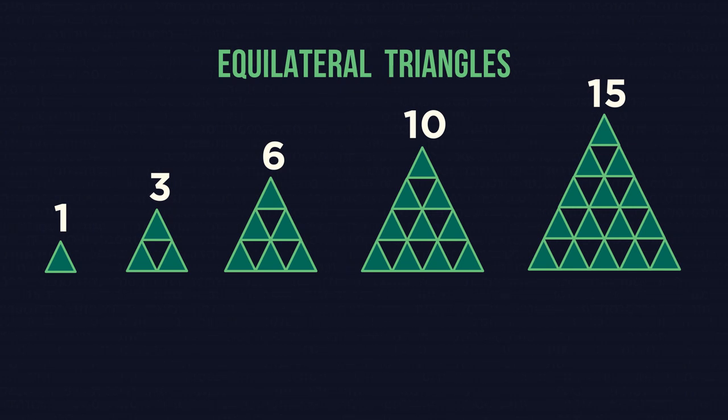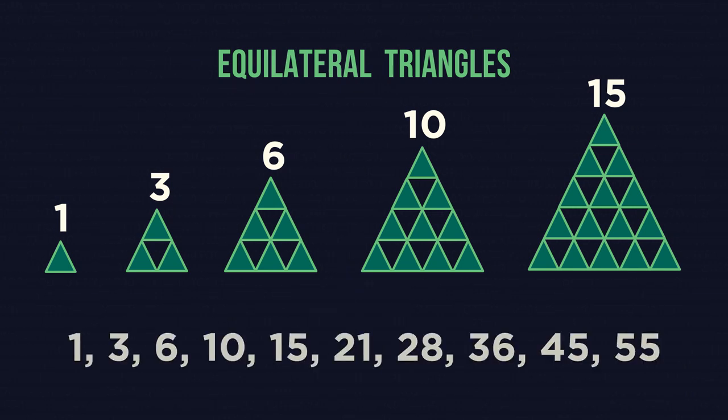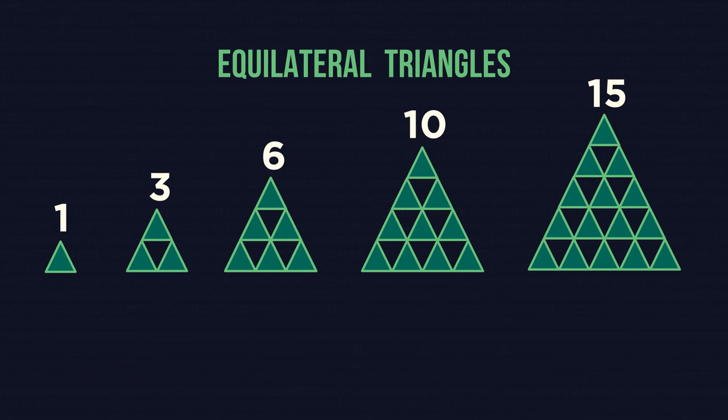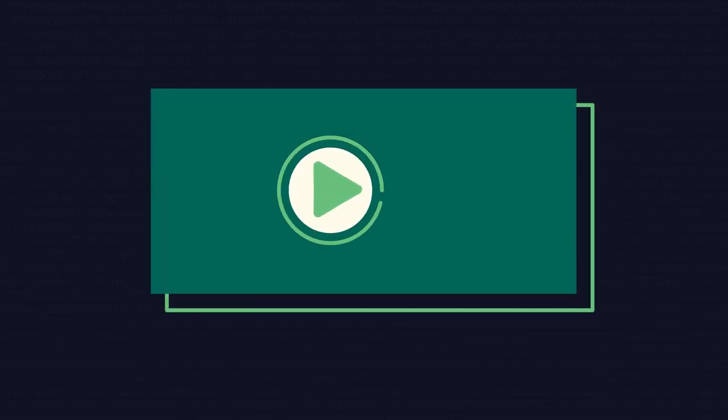See if you can work out the remaining first 10 triangular numbers. The nth term for finding a triangular number is n to the power of 2 plus n divided by 2. You can find this because the triangular numbers are a quadratic sequence. See this video here for more information.